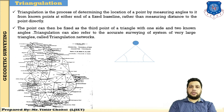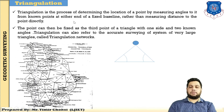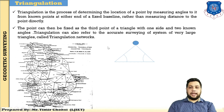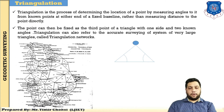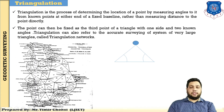This is the difference between traversing and triangulation. Triangulation is the process of determining the location of a point by measuring angles from known points at either end of a fixed baseline rather than measuring distance directly. The point can be fixed as the third point of a triangle with one side — the baseline — and two known angles. Triangulation can also refer to the accurate survey of a system of very large triangles, called a triangulation network, formed by the interconnection of triangles.